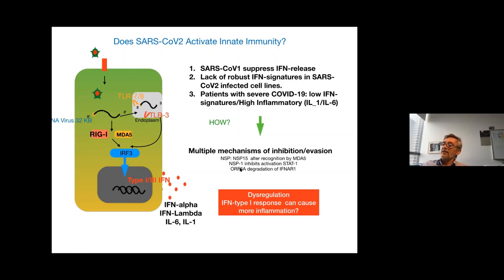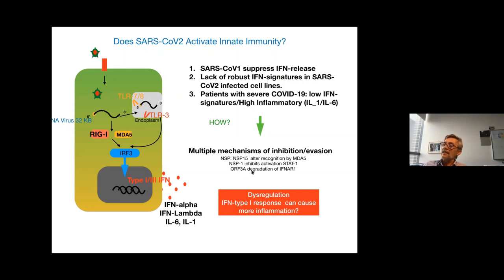Some examples: non-structural protein 15 can alter the recognition of RNA by MDA5, which helps activation of RIG-I — part of the pattern recognition receptor for RNA viruses. Non-structural protein 1 can directly inhibit activation of STAT1, a classical interferon signaling gene. Another non-structural protein can increase the degradation of the interferon alpha receptor. The data really suggest that the virus is able to dysregulate the type 1 interferon response, but causes more inflammation.